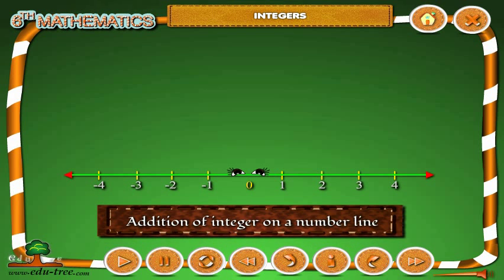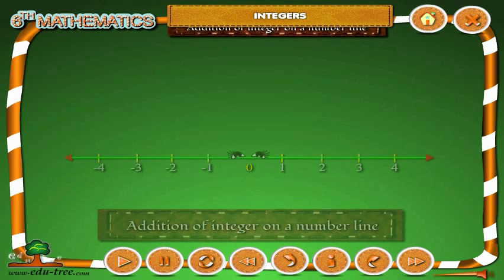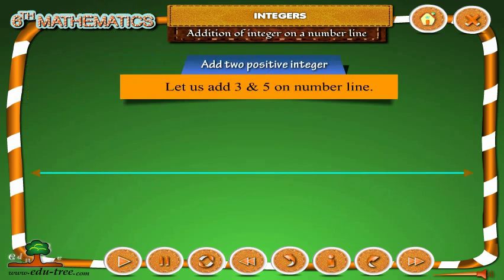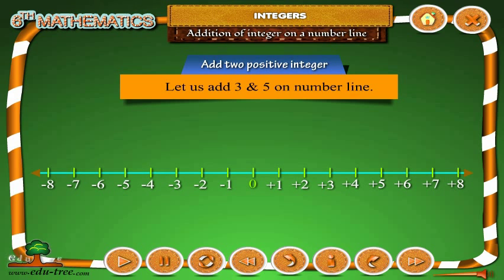Addition of integers on a number line. Let us first add 2 positive integers. Let us add 3 and 5 on the number line.